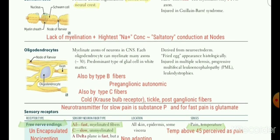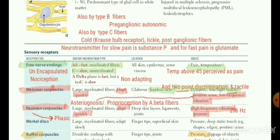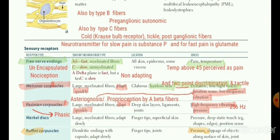Moving on to sensory receptors, which are very important from a physiology point of view. All environmental sensations are carried from a receptor to the nerves and then the spinal cord. For pain, the receptor is a free nerve ending, which is unencapsulated — hence it is called a free nerve ending. An MCQ: an unencapsulated ending is present for pain receptors, also called nociception.